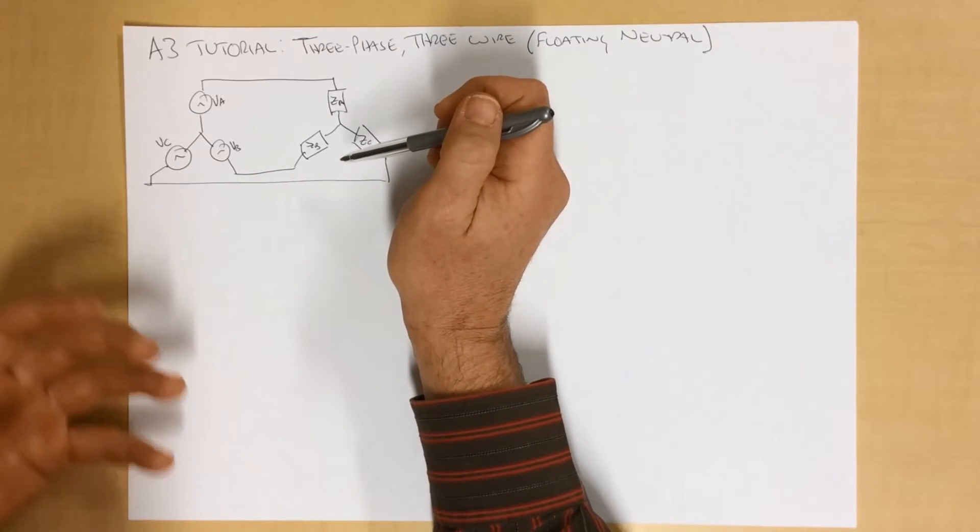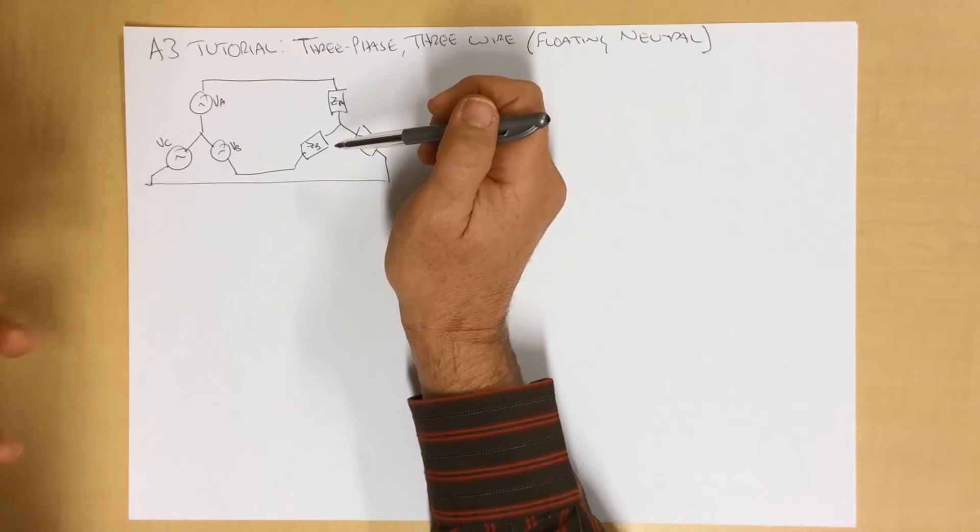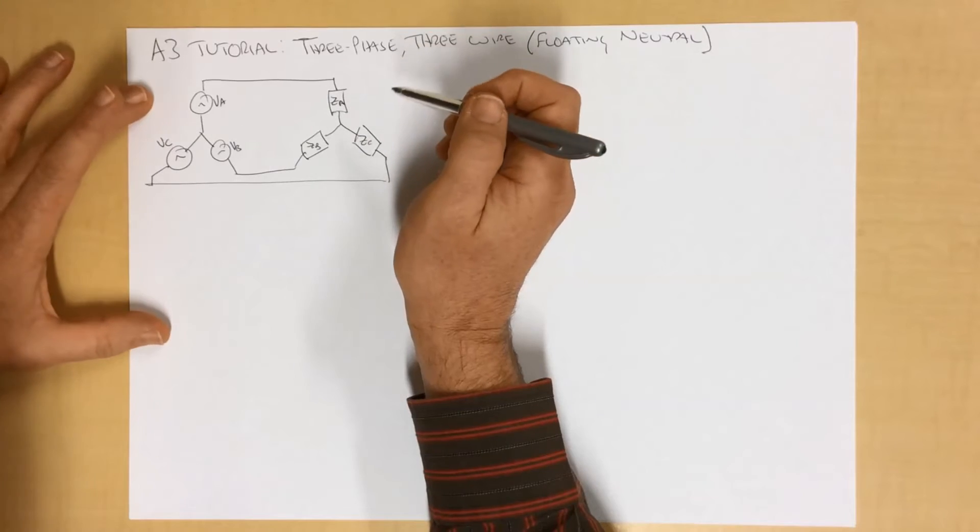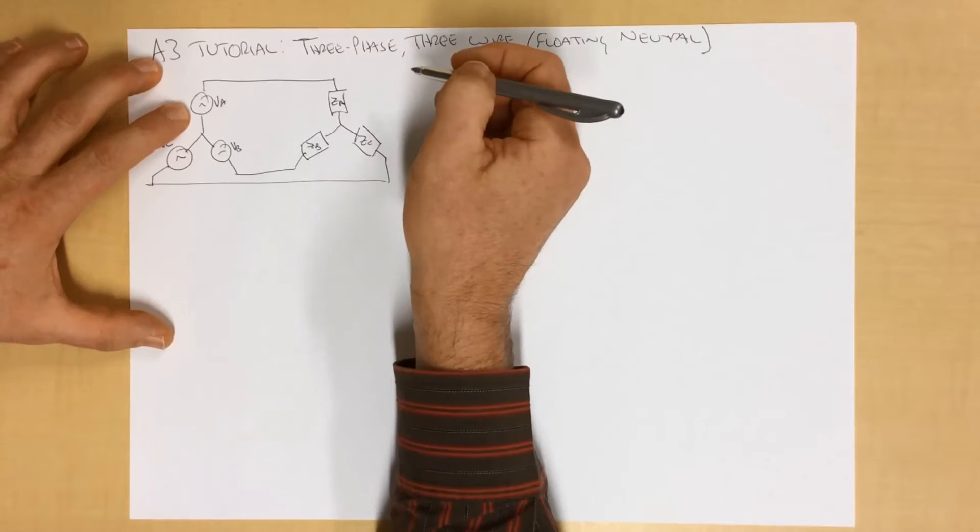So let's look at what happens when we've got a non-ideal, let's call it a realistic system. And we'll work with voltages here, we'll go through the numbers.